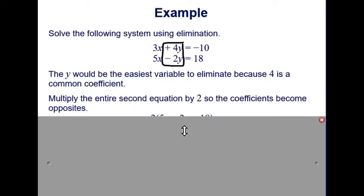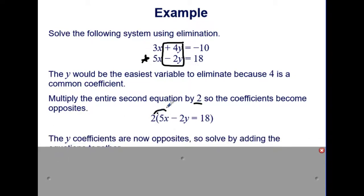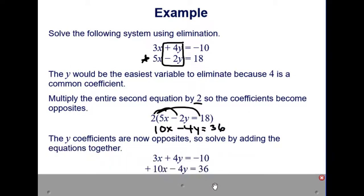Multiplying the entire second equation by 2 will make the coefficients become opposites. So if we take the second equation, 5x minus 2y equals 18 and multiply by 2, that will give us 10x minus 4y equals 36. So now together, we have our opposite coefficients, now 4y and negative 4y. So we can add them together to eliminate and get 13x equals 26 and x equals 2.